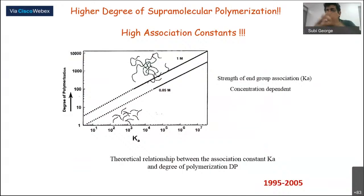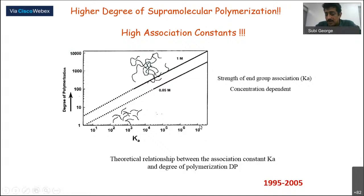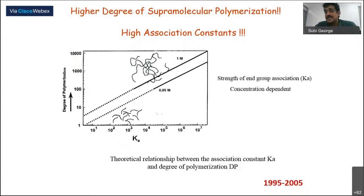One of the challenges in supramolecular polymerization is: if you want high molecular weight — because polymeric properties are determined by molecular weight — you need a high association constant. For a degree of polymerization as high as 10,000, you need an association constant of approximately 10^7. By comparison, A-T and G-C base pairs in DNA have an association constant around 10^3, meaning you have to make something multiple orders stronger than nature's designs. This was the key challenge — identifying motifs with very high association constants.